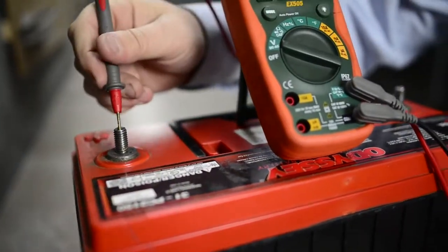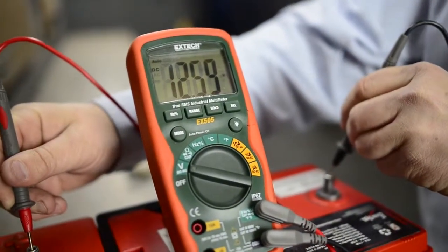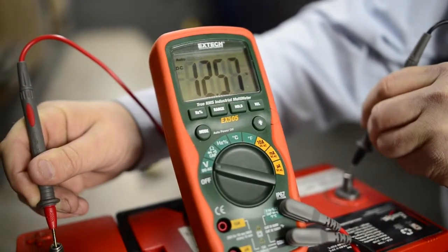For example, I've got my meter leads here. I'm going to put my red one on positive, and I'm going to put my black one on the ground, or negative.